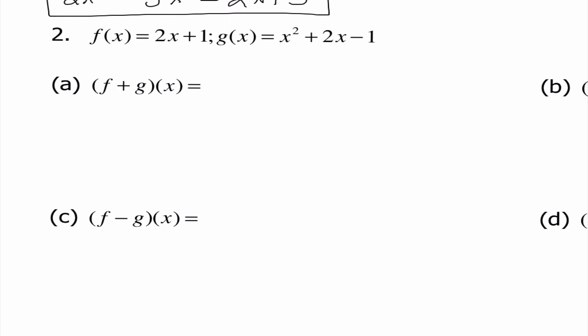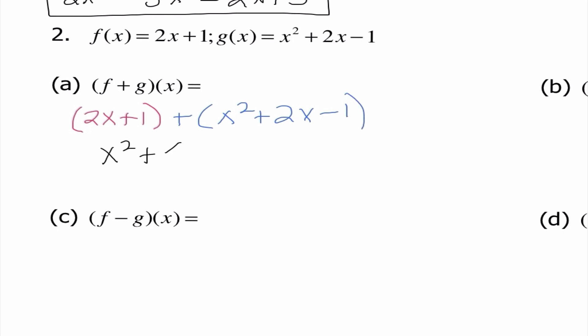For our next problem, f of x is 2x plus 1 and g of x is x squared plus 2x minus 1. If I'm adding f and g together, putting them in parentheses and combining like terms: I have x squared, 2x plus 2x is 4x, and 1 plus negative 1 cancels out. I can simply leave x squared plus 4x as my final answer.